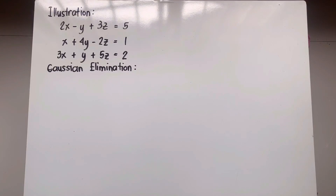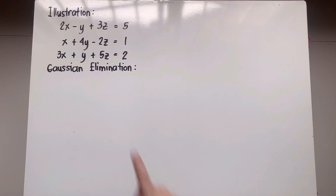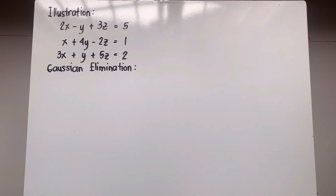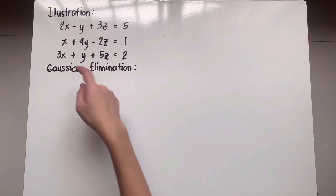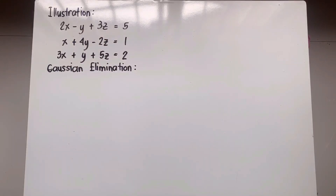This time, we're going to learn how to solve systems of linear equations using the Gaussian elimination method. For this method, we have to create an augmented matrix. The augmented matrix is made by writing down the coefficient matrix. So let's start with that.